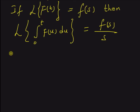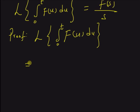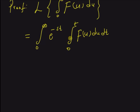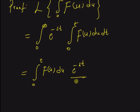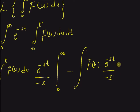Now, let us look at the proof of this theorem. Laplace transform of the integral from 0 to t of f of u du is by definition equal to integral 0 to infinity of e to the power minus st times integral 0 to t of f of u du dt. Now, by using integration by parts, consider the integral 0 to t f of u du as the first function and e to the power minus st as the second function.